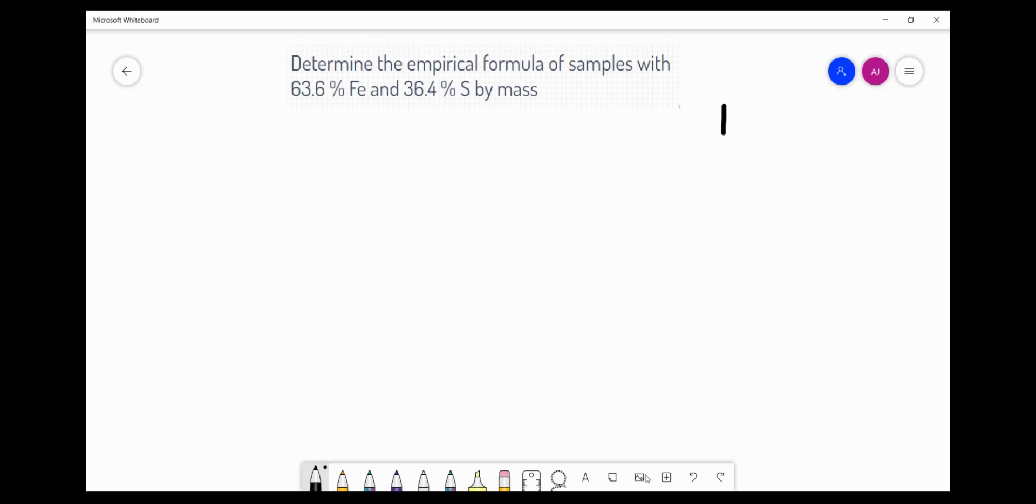The reason why I chose this example is because here is a combination of elements which have two possibilities for the compound which could form. As you know, iron is multivalent. So when iron combines with sulfur, we have a possibility of producing FeS, iron 2-sulfide, or we can produce iron 3-sulfide, Fe2S3. Since a formula is a ratio of atoms and not a ratio by mass, the percent composition doesn't immediately tell us what the chemical formula is going to be.